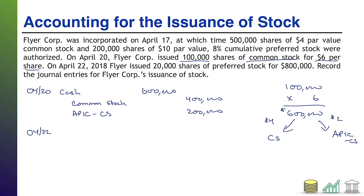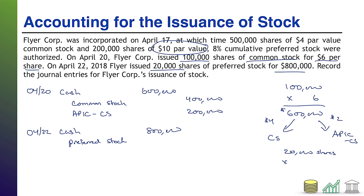Now for April 22nd: FlyerCore issued 20,000 shares of preferred stock for $800,000. Debit cash $800,000 because you issued preferred stock. Again, you can't simply credit Preferred Stock $800,000 — you have to check the par value, which was $10. So 20,000 shares × $10 par = $200,000 goes to Preferred Stock, and the remaining $600,000 excess goes to Additional Paid-In Capital — Preferred Stock. And that's it for issuance.